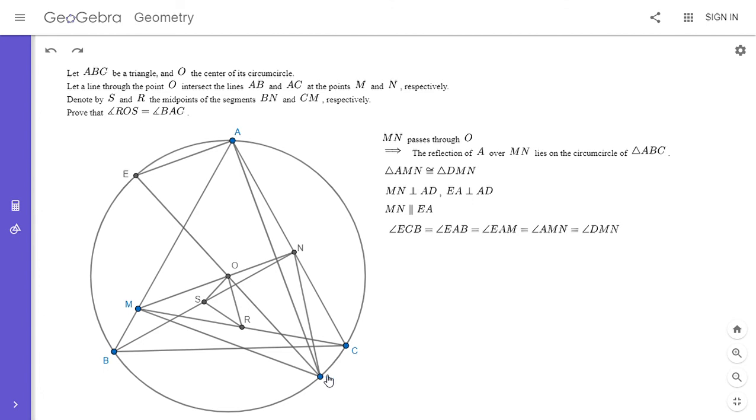Then we could do the same thing to show that angle EBC equals angle DNM. So I'm going to do that angle chase here. We have angle EBC. That's 180 minus angle EAC, because of the way the diagram is configured.